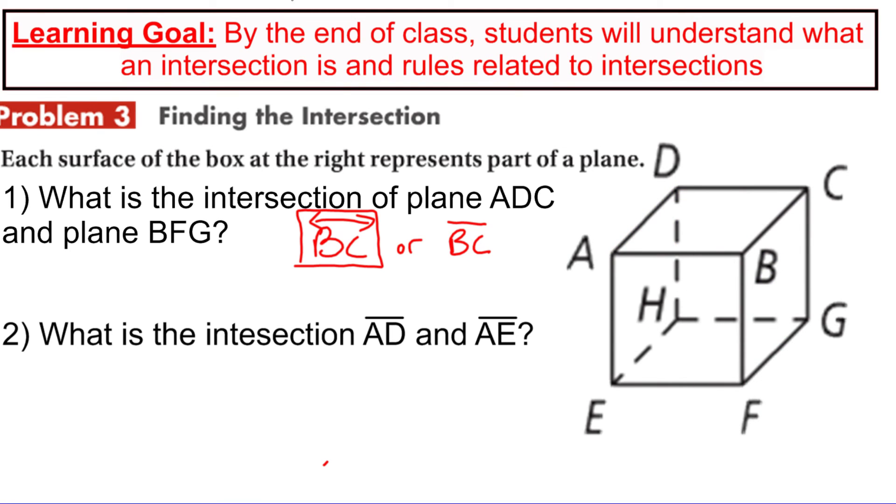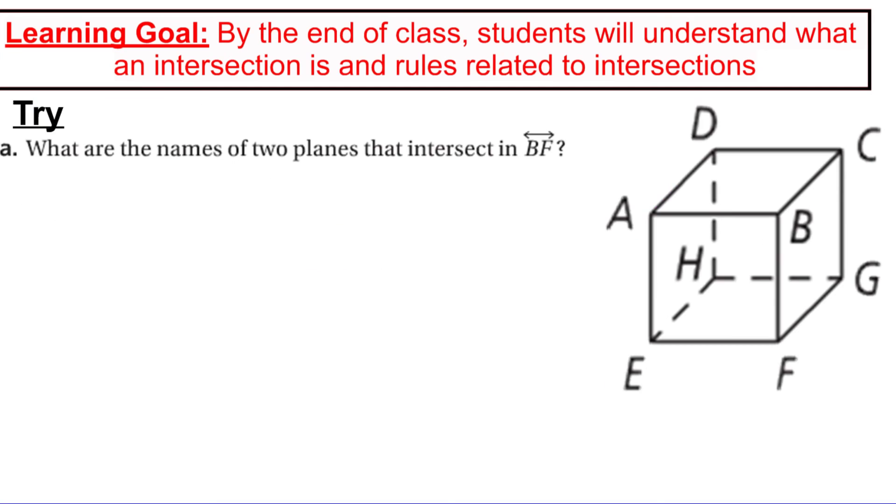And I'm going to just highlight the lines that they asked about. So they said line AD. So that's this one right here. And line AE. And so it looks like, again, there's a point right here, point A, that represents the intersection of those two lines. So lines intersect at a point. Good.